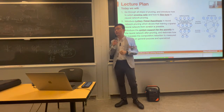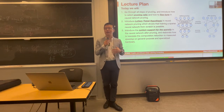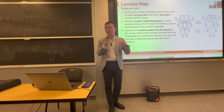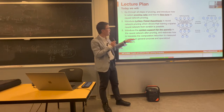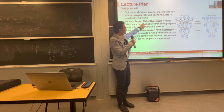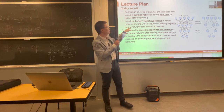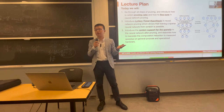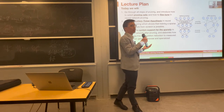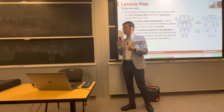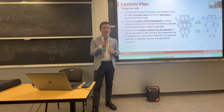The next topic is how to fine-tune to recover accuracy after pruning — do you increase or decrease the learning rate, and do you prune everything at once or gradually? Then we'll introduce the lottery ticket hypothesis, which shows that training a sparse neural network from scratch is sometimes possible. Finally, we'll cover how to realize speedups by pruning using different granularities and specialized hardware.